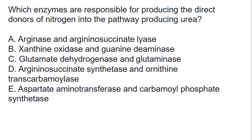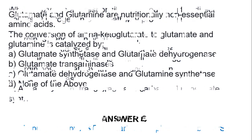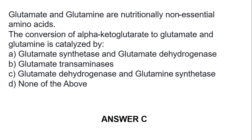The next question: which enzymes are responsible for producing the direct donors of nitrogen into the pathway producing urea? The best answer among the options is E, which is aspartate aminotransferase and carbamoyl phosphate synthetase.